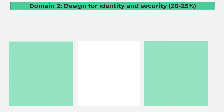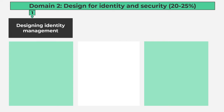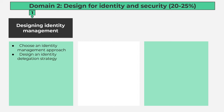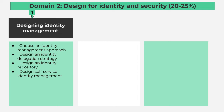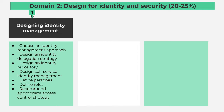Domain 2: Design for Identity and Security, 20-25%. Number 1, Designing Identity Management contains 7 subtopics: choose an identity management approach; design an identity delegation strategy; design an identity repository; design self-service identity management; define personas; define roles; recommend appropriate access control strategy.